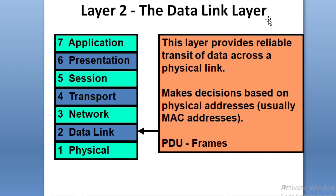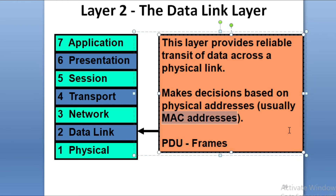The Data Link layer handles data travel using MAC addresses. The IP address is a logical address and can change, while the MAC address is a physical and permanent address fixed to the NIC card. The MAC address does not change, whereas the IP address can change.